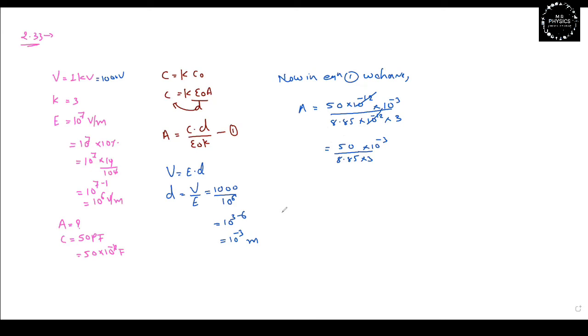Calculating 50 divided by 8.85 and by 3, we get approximately 1.88. The overall answer is 1.85 × 10^-3.